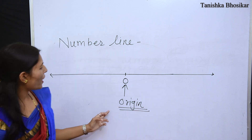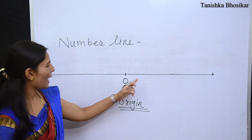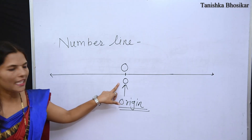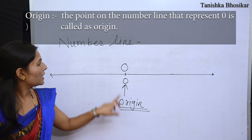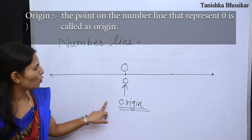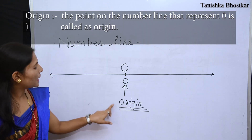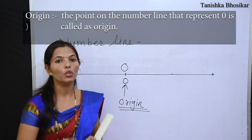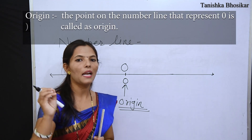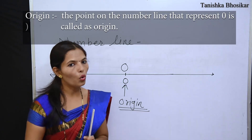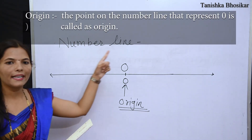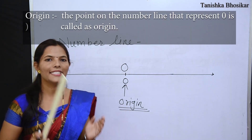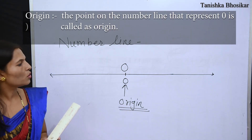What is origin? The point on the number line which indicates 0, or which shows 0, is called as an origin. When the number line starts, the central point is the origin. So this is the definition of origin: the point on the number line which shows 0 is called as the origin.